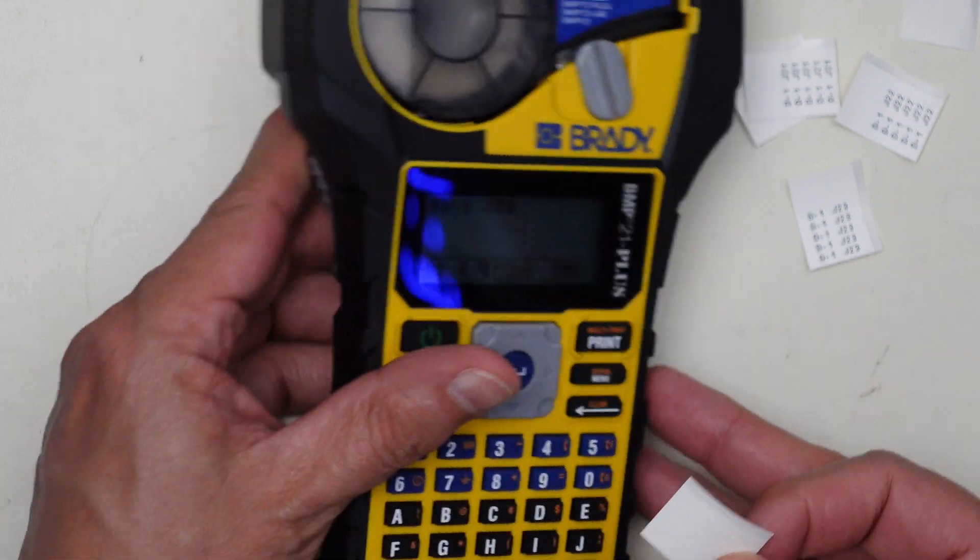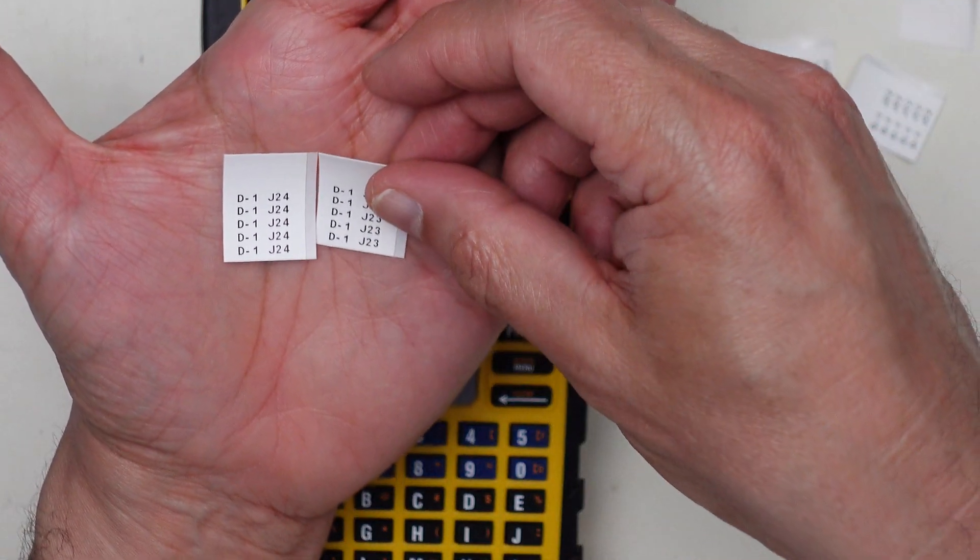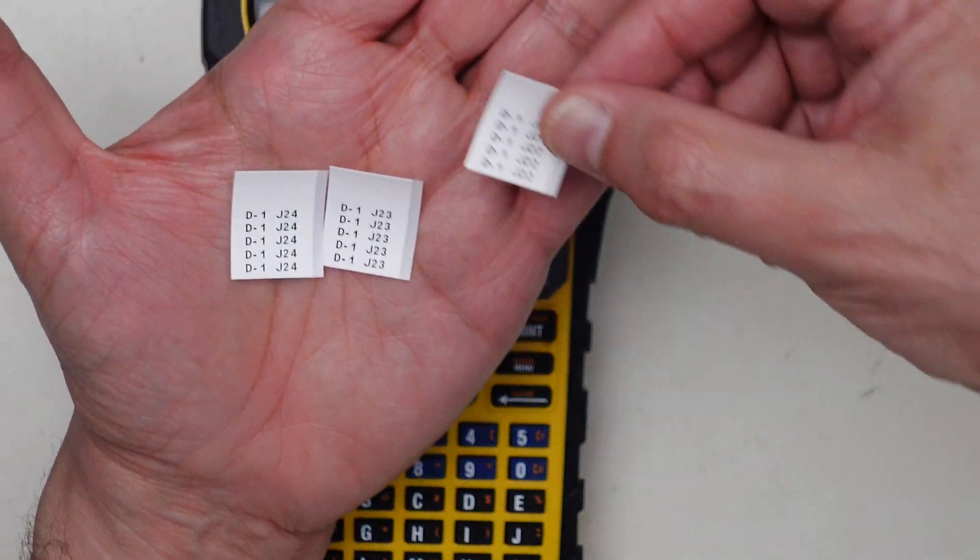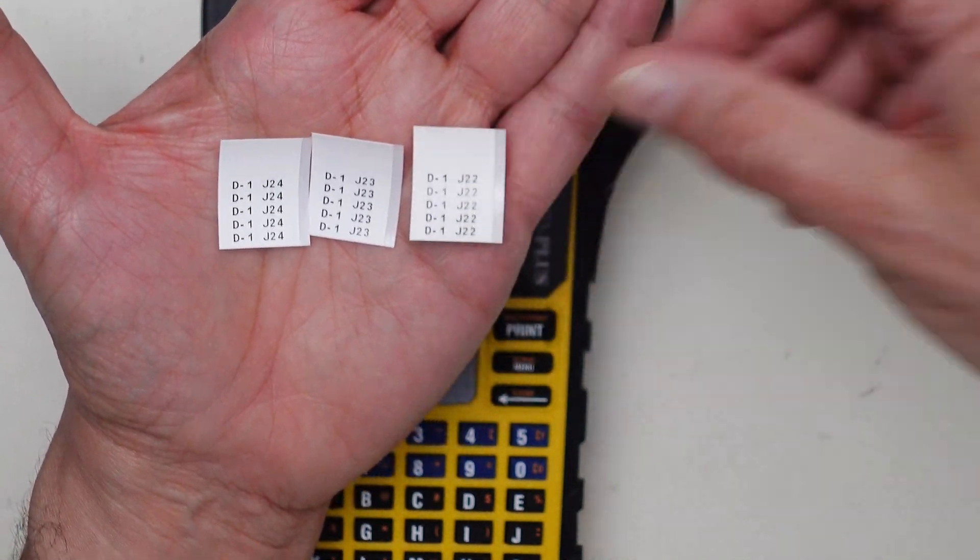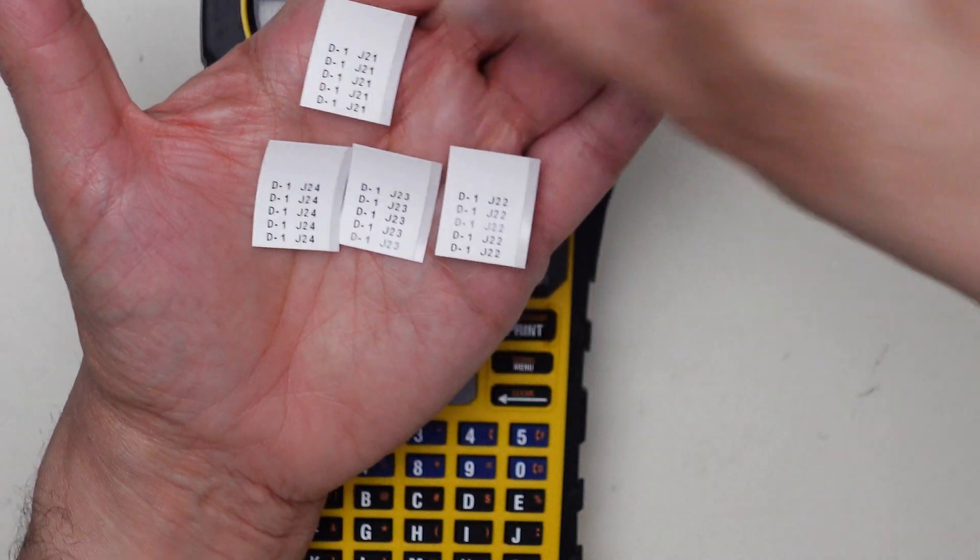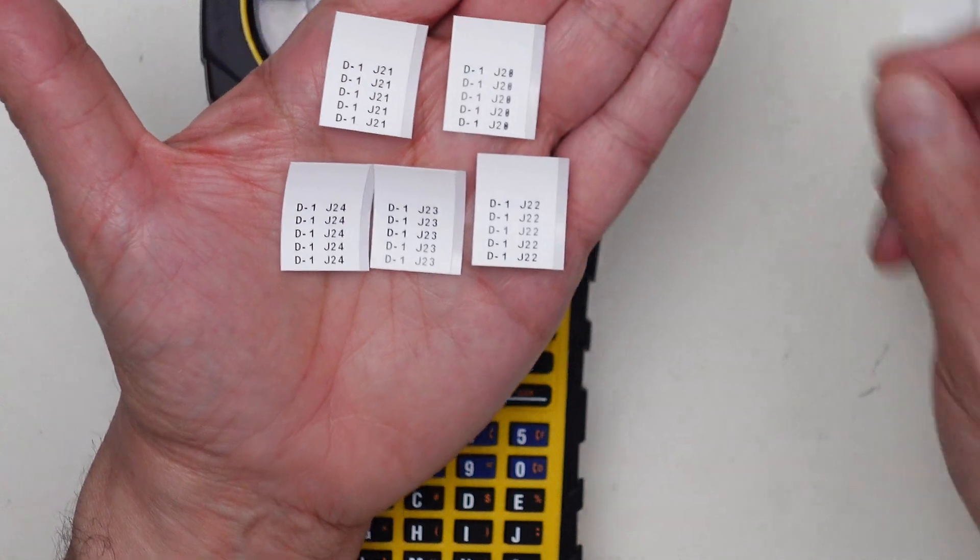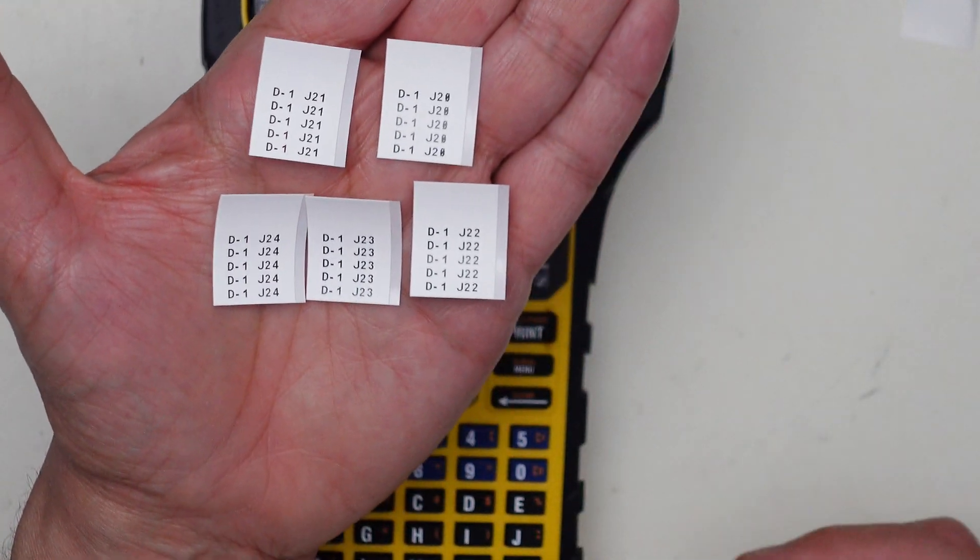Now what do I have? I have a series of labels. D1-24, dash 23, dash 22, dash 21, and dash 20. So now I have the five labels that I created for five cables, at least five ends of a cable.